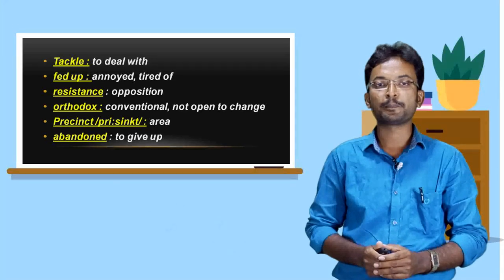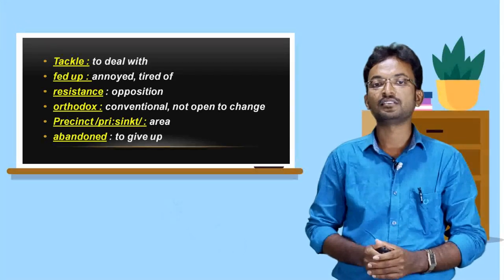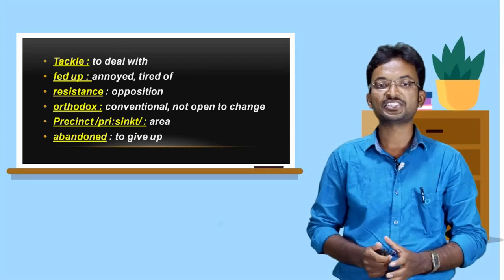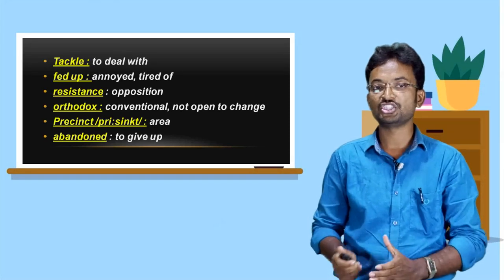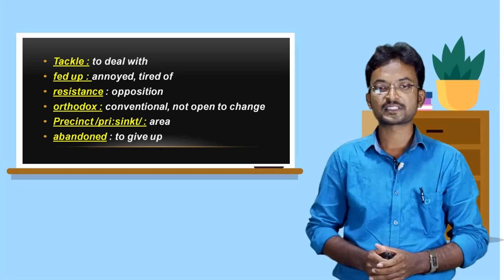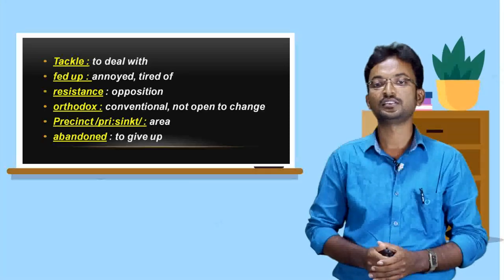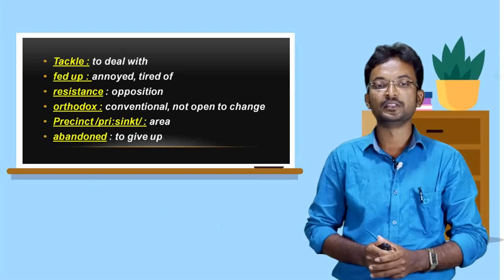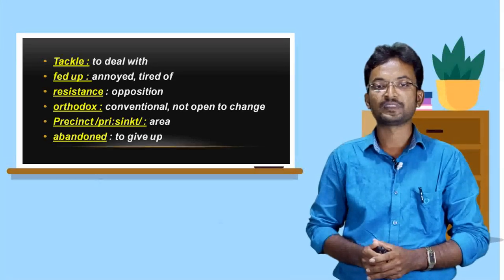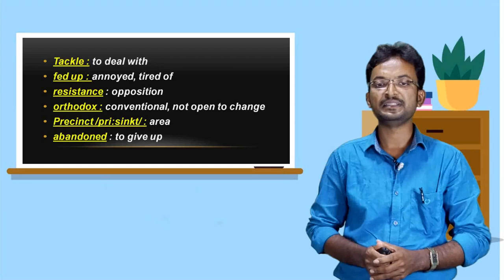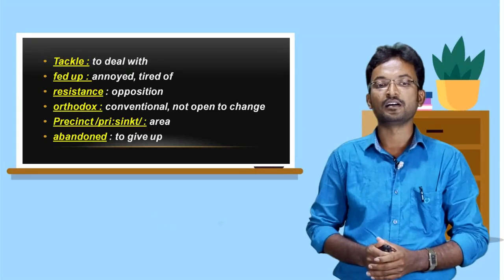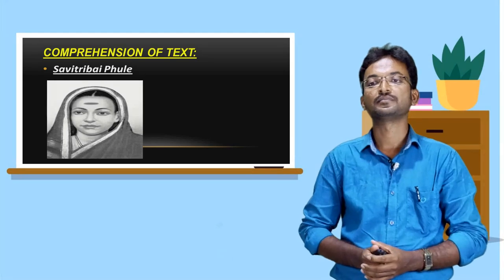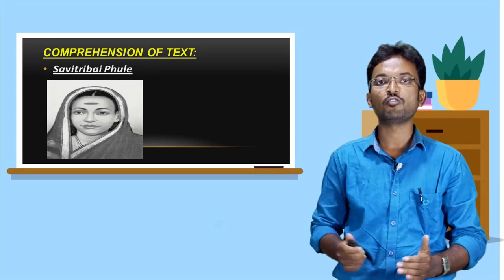Pied off means annoyed or tired of. Resistance means opposition. Orthodox means conventional or not open to change. Precinct means area. Abandoned means to give up. I hope you have now known all the meanings.